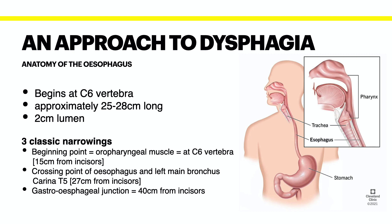When explaining where lesions are, surgeons generally describe them in relation to the distance from the incisors so that other clinicians can find them on G-scope. There are three classic narrowings of the esophagus — these are normal esophageal constrictions. Some texts might list four, but these are the three classic narrowings.